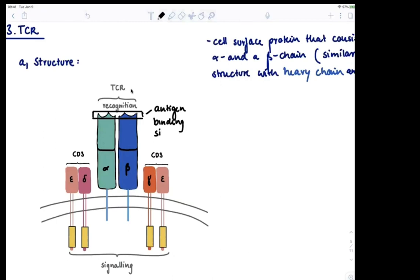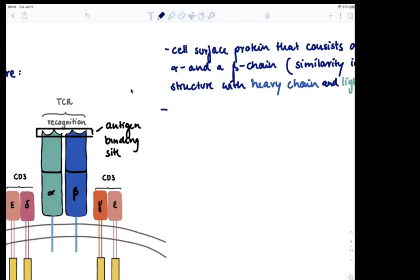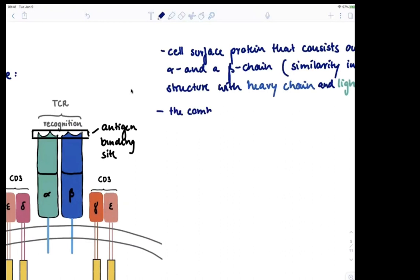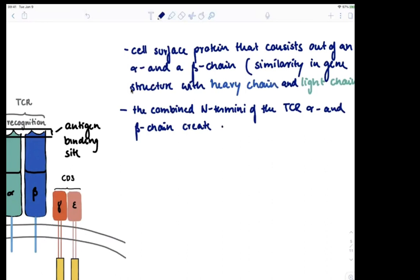Very similar to the BCR, the combined N-termini of the TCR alpha and beta chain create the single antigen binding site at the tip of the TCR.